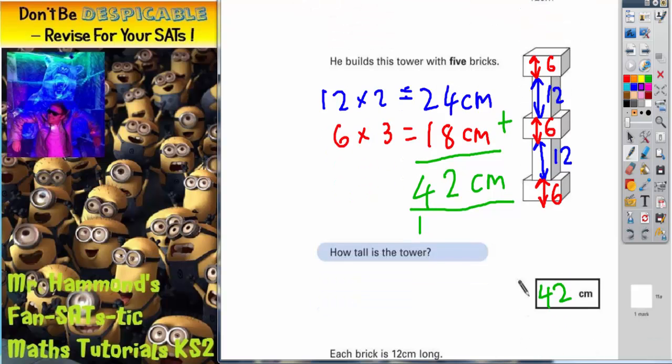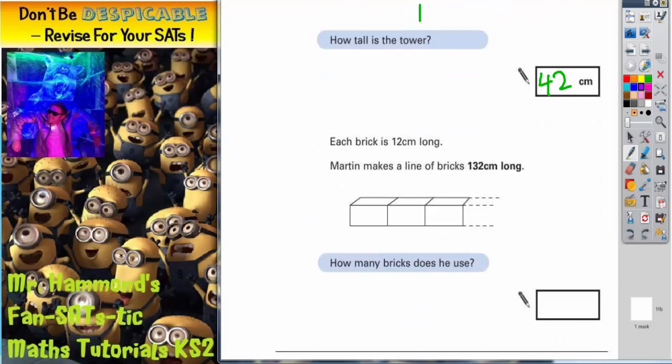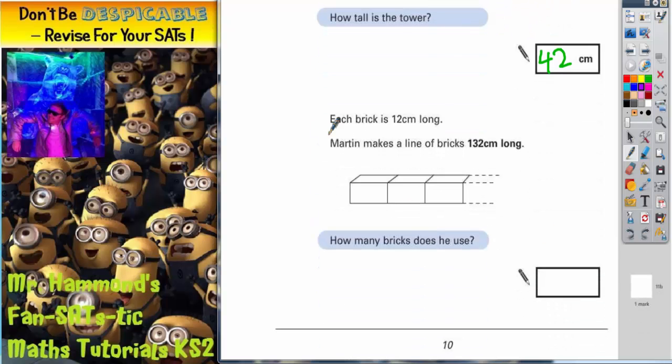Now let's scroll down and see what the second part of the question says. This time it says each brick is 12cm long. Martin makes a line of bricks 132cm long. How many bricks does he use?